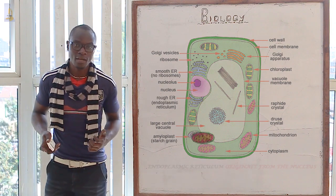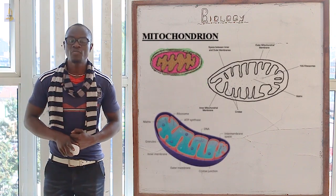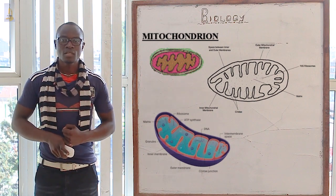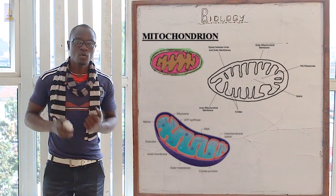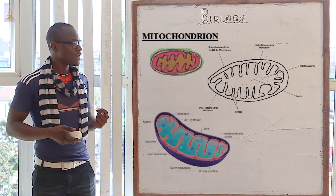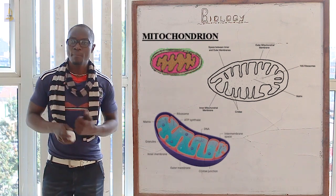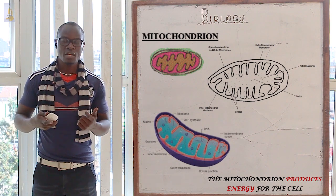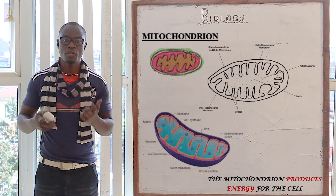Let's look at the next organelle — the mitochondria. If it is one, it's called mitochondrion; if there are many, it's called mitochondria. These are rod-shaped organelles. They have an outer membrane which is greatly folded into structures which are called cristae. The main function of the mitochondria is to produce energy; they are the power source or energy source of the cell.